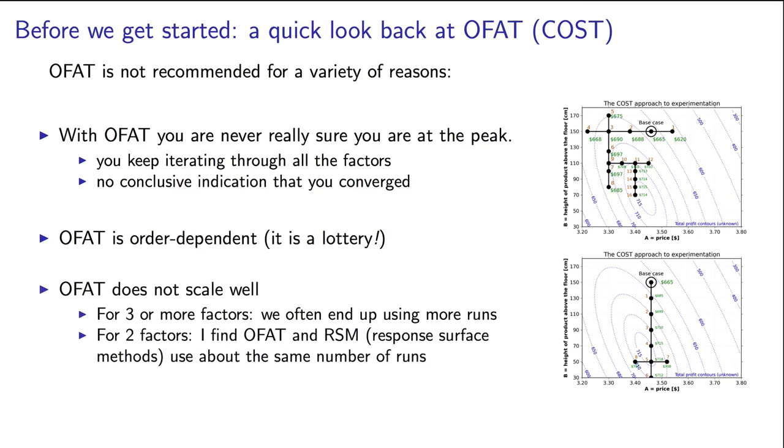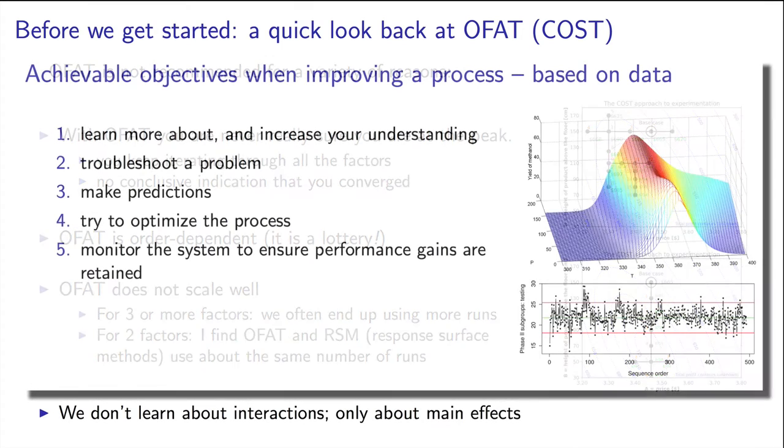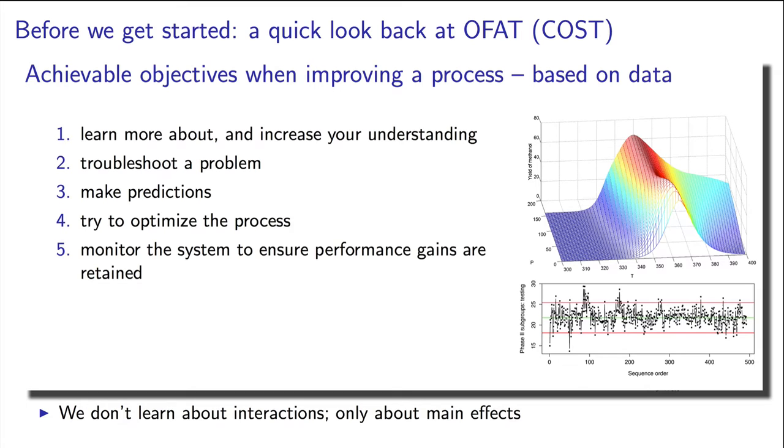Furthermore, this approach doesn't scale well. If you had five factors, for example A, B, C, D, and E, then this haphazard searching across the five factors leads to inefficient experimentation. By using the OFAT approach, you will not learn about the interactions in your system. Recall from an earlier video that learning more about our systems was the first way in which we can use data to improve our processes.